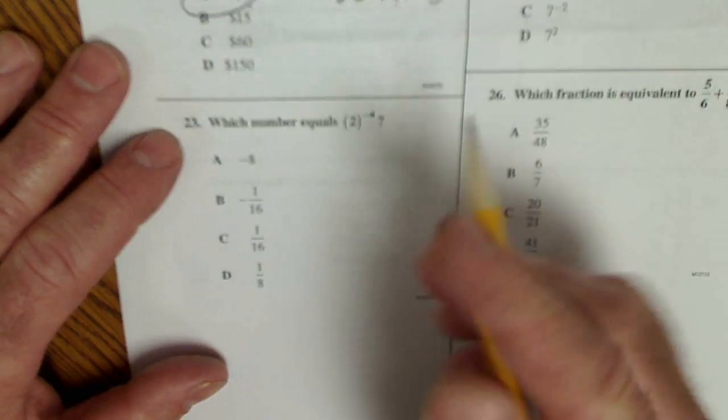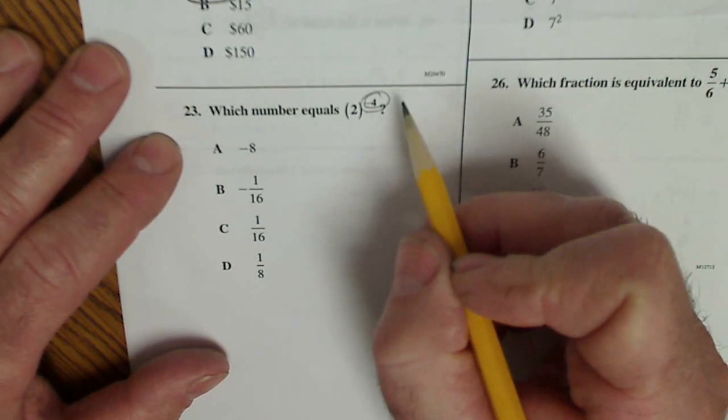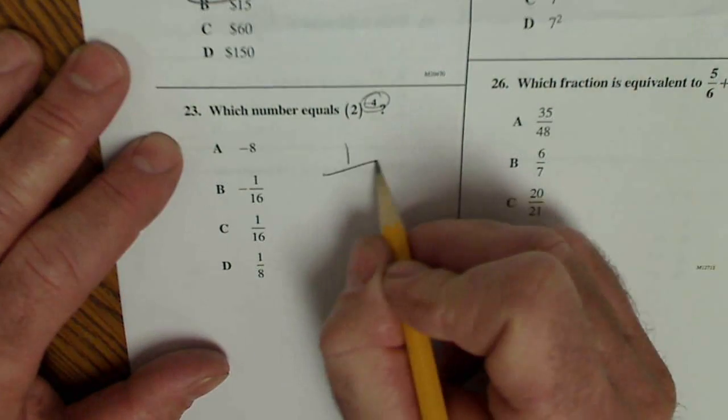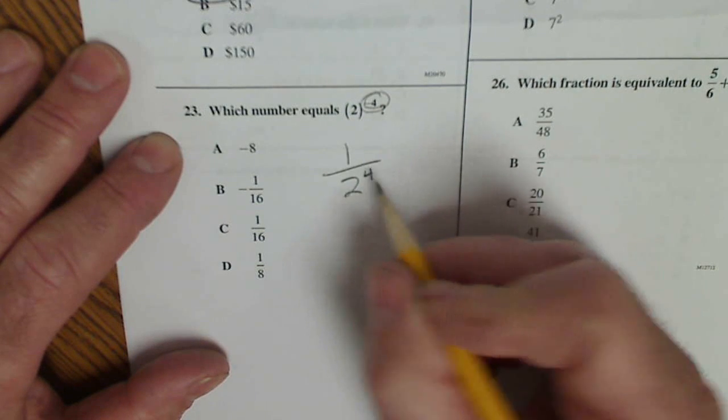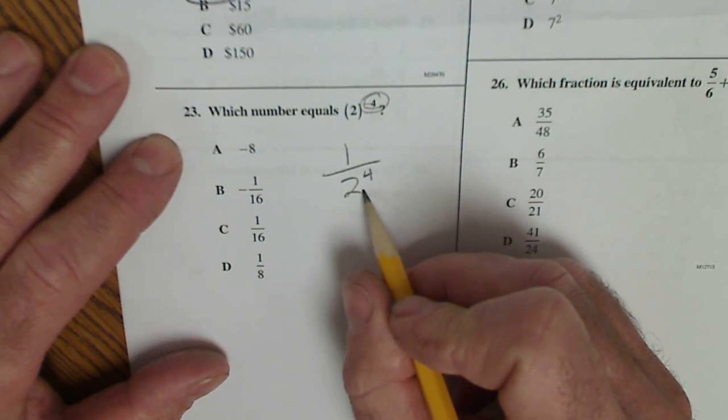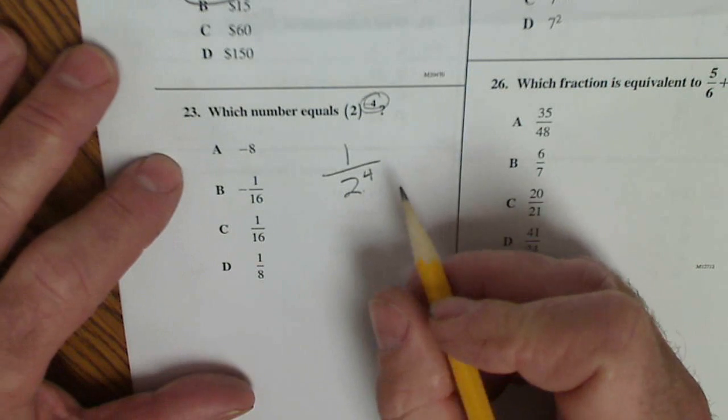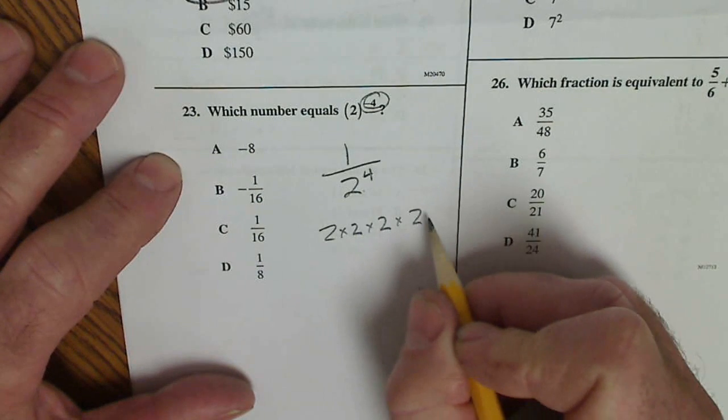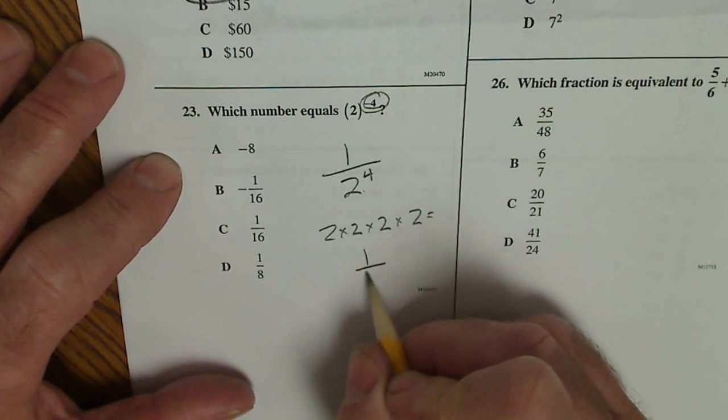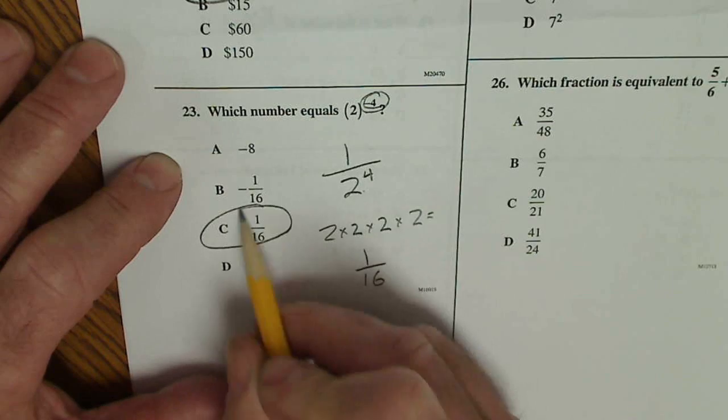Quick review on exponents. If I have a negative exponent, it's a positive exponent in the denominator. So, I can make that negative 4 a positive 4 in the denominator. So, 2 times 2 is 4, times 2 is 8, times 2 is 16. So, I have 1 over 16, and there's my answer there.